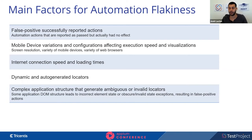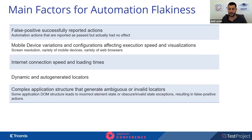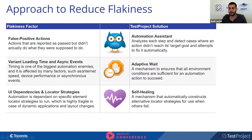Internet connection speed and different loading times can also affect flakiness — for example, using the same application on dev versus production can make a major difference in speed. We also have dynamic and auto-generated locators, where many applications have complex structures that generate ambiguous or invalid locators.